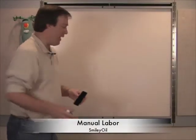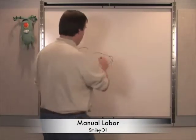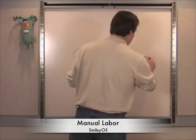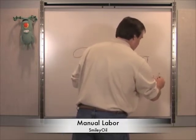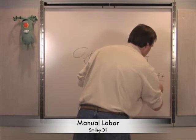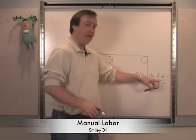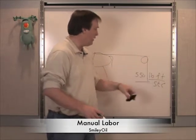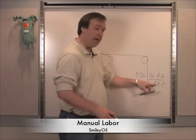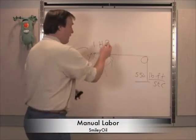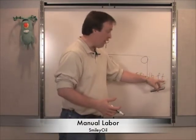Let's do some math. We have a horse, a pulley, and 550 pounds of weight. This horse can pick 550 pounds up one foot every second. We start with one foot, two feet, three feet — that is called one horsepower. That's an international standard because horses are international: 550 pounds lifted one foot per second.